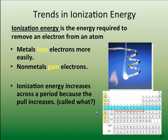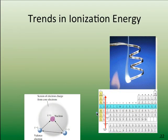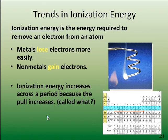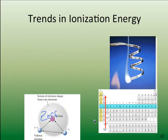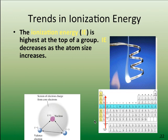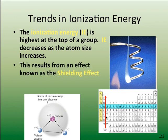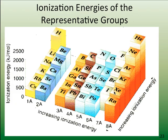The ionization energy increases across a period because the pull — the Z-effective — increases as you go across. The ionization energy is highest at the top of a group and decreases going down due to that shielding effect. So ionization energy increases going across those main group representative elements, and decreases going down as the radius gets bigger due to that shielding effect.